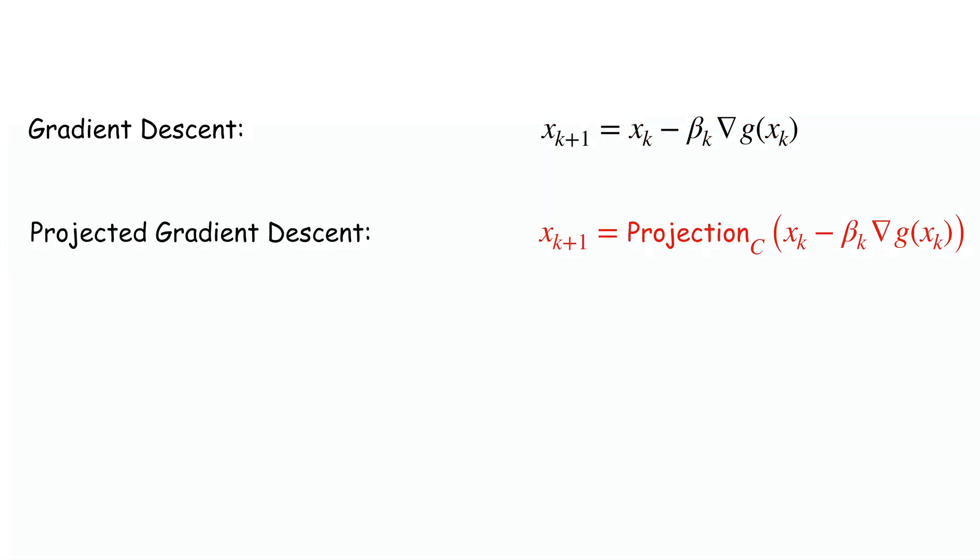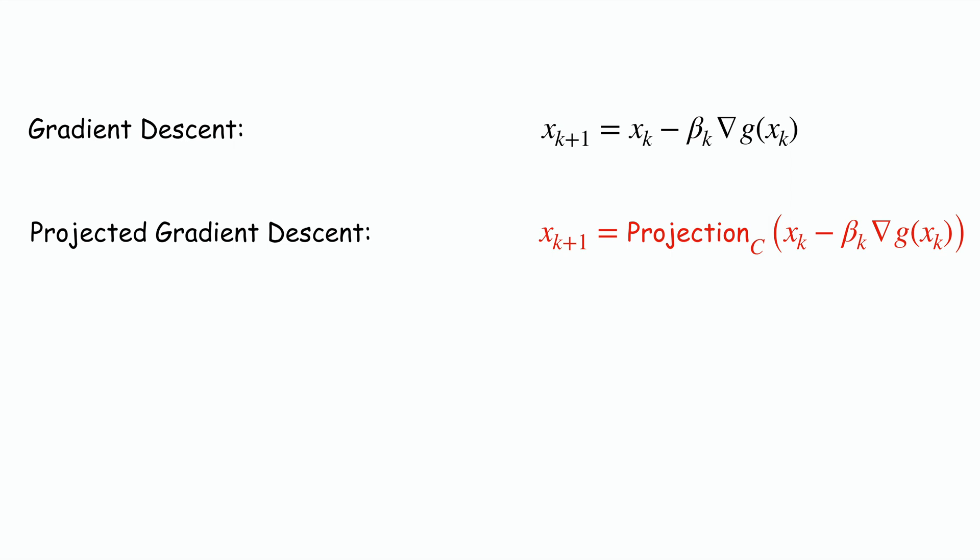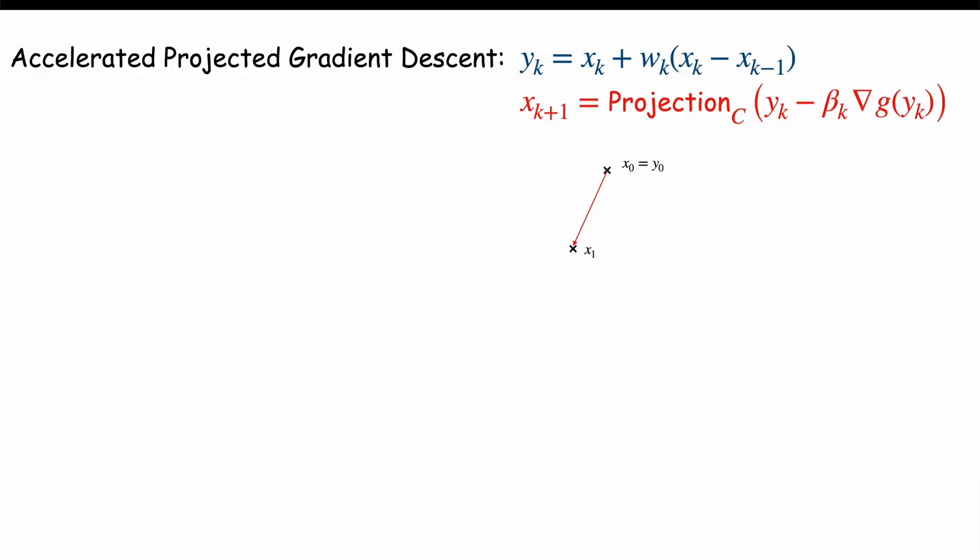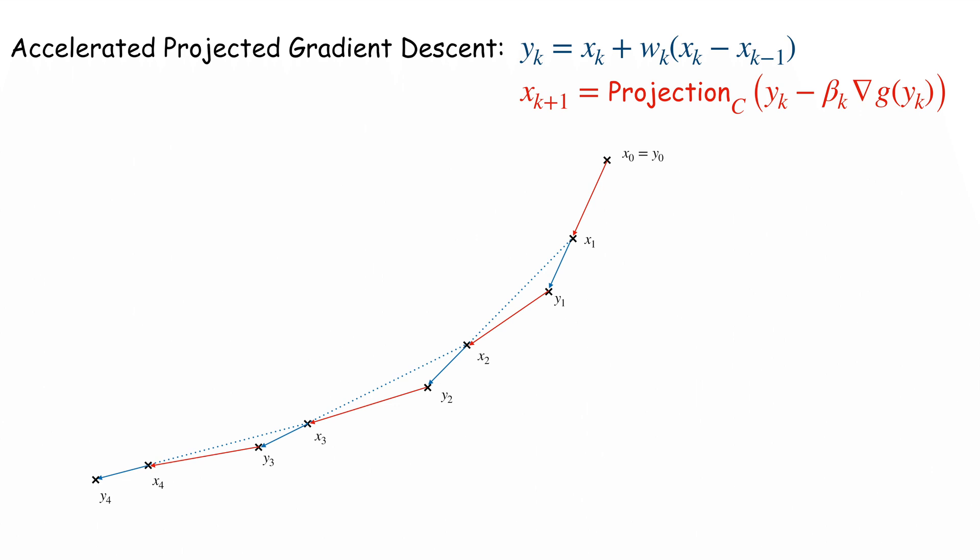At each step K, the update of a projective gradient descent algorithm is simply the projection on the set C of a gradient descent update. That's all. Finally, some works have shown that we can speed up the process by adding an extrapolation step in the gradient descent in blue here with some parameter w_K in [0,1]. Let's see what happens after a few steps. Here we draw in red the gradient descent update and in blue the extrapolation update. At every step K, the gradient descent updates in red tend to push x_K to the left of the screen while the extrapolation updates in blue tend to push it to the bottom of the screen. The extrapolation step thus tapers down the latest gradient descent update by averaging it with the previous updates. Such an algorithm is called accelerated projective gradient descent.